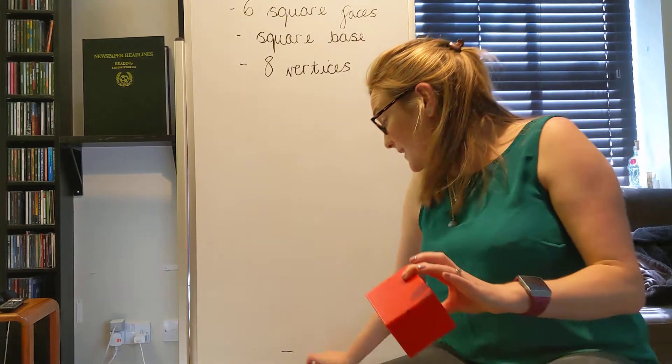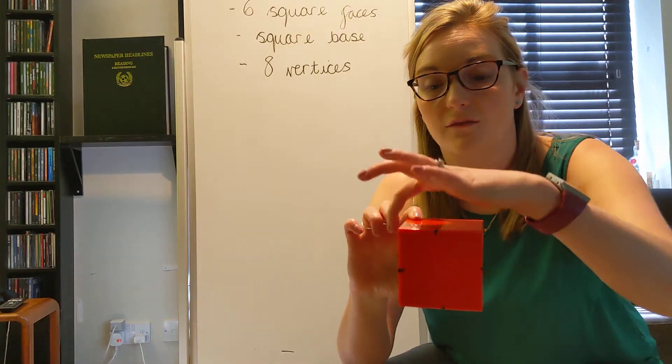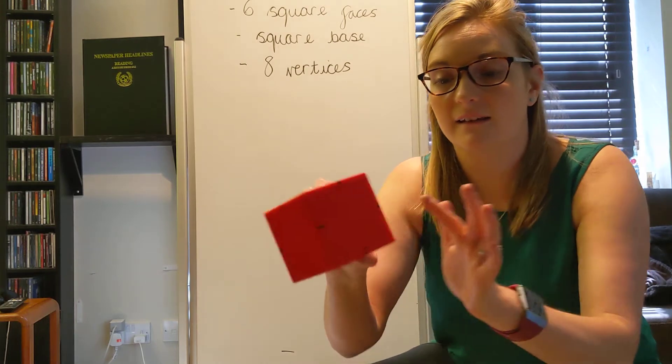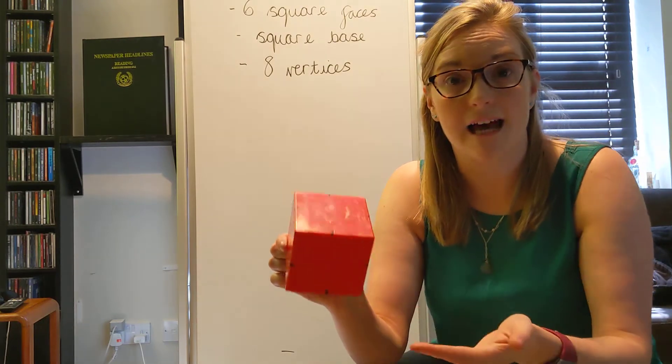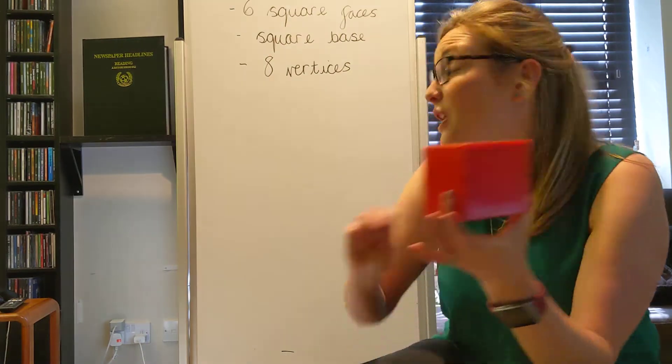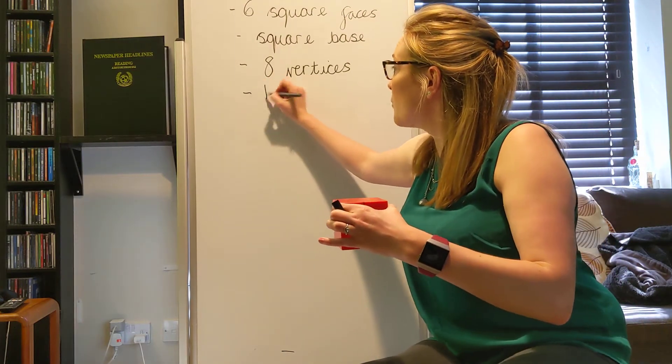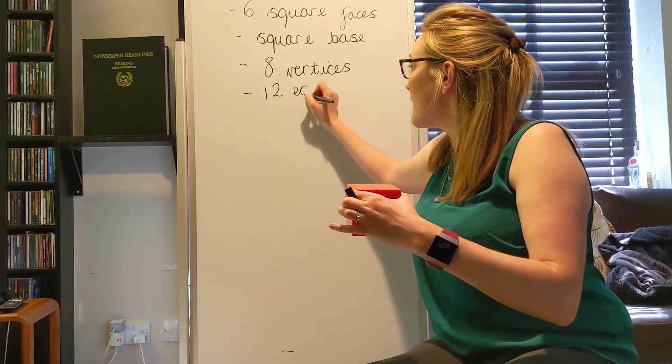Now I can't remember how many I said, so let's count them together. We've got one, two, three, four, five, six, seven, eight, nine, ten, eleven, twelve. That's a lot of edges, isn't there? So a cube has twelve edges.